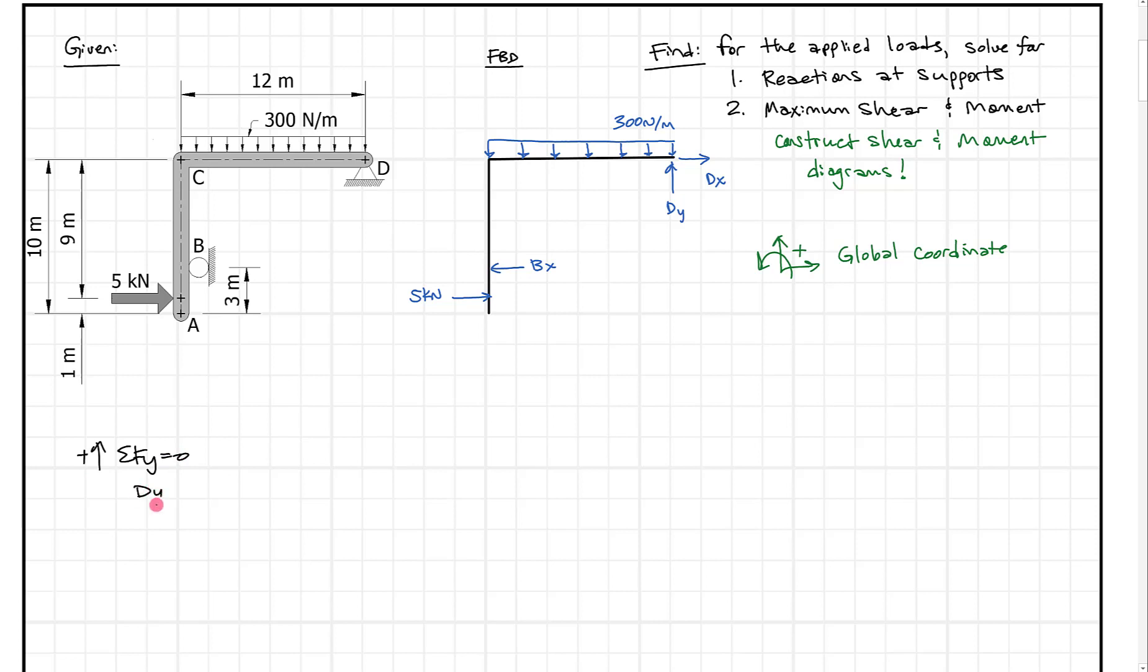Dy is going up, and we see this 300 newton meters coming down, but that's the distributed force. We have to find a resultant. The resultant force we'll use is basically 300 times the total length, which is 12 meters. So we subtract off 300 newtons per meter times 12 meters as our resultant force. There's no other vertical forces, so this equals zero. When you do the math, Dy minus 3600 newtons equals zero.